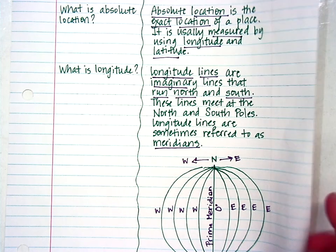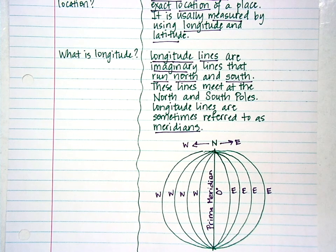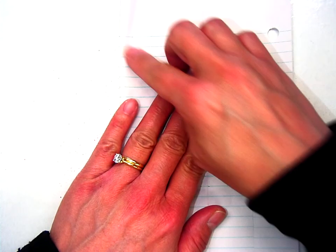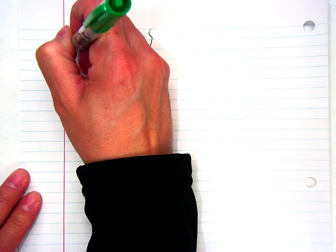Now I need to turn my paper over so that I can take notes on latitude. If you need to turn your paper over, go ahead. Fold your paper from the left-hand side to the right-hand margin if you need to, and draw your line down the fold again.